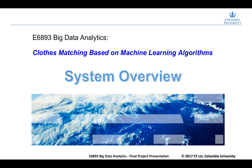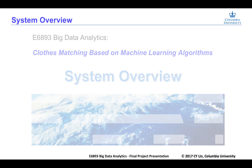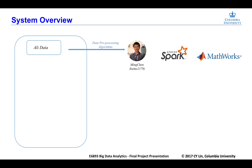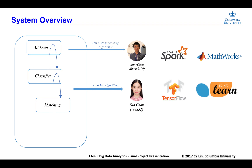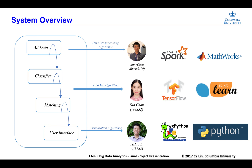Now let's take a quick look at our system. The system contains three parts. First, we extracted data and pictures from Ali Data with some data preprocessing algorithms. This part was done by Ming Chen Xu using Spark and MATLAB. Next, we constructed a convolutional neural network and applied some machine learning algorithms to do classification and matching. This part was done by Yao Chiu using TensorFlow and scikit-learn. At last, we built up a user interface with some visualization algorithms. This part was done by Yi Hao Li with wxPython.